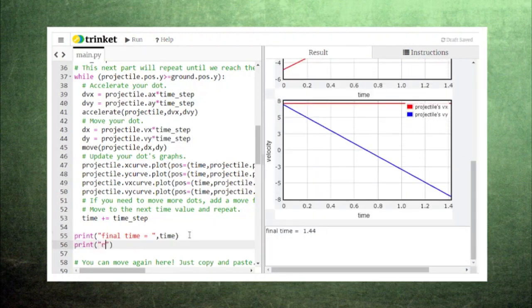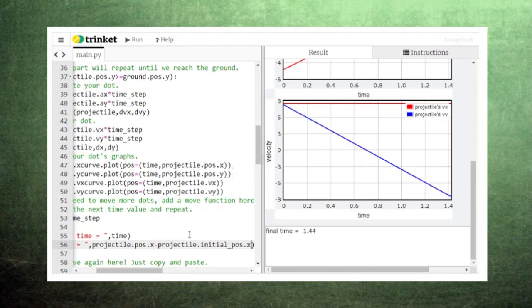To get the range, we can access the current value of the projectile's position and the initial value of the projectile's position. Taking the difference between these two values will tell us the range.